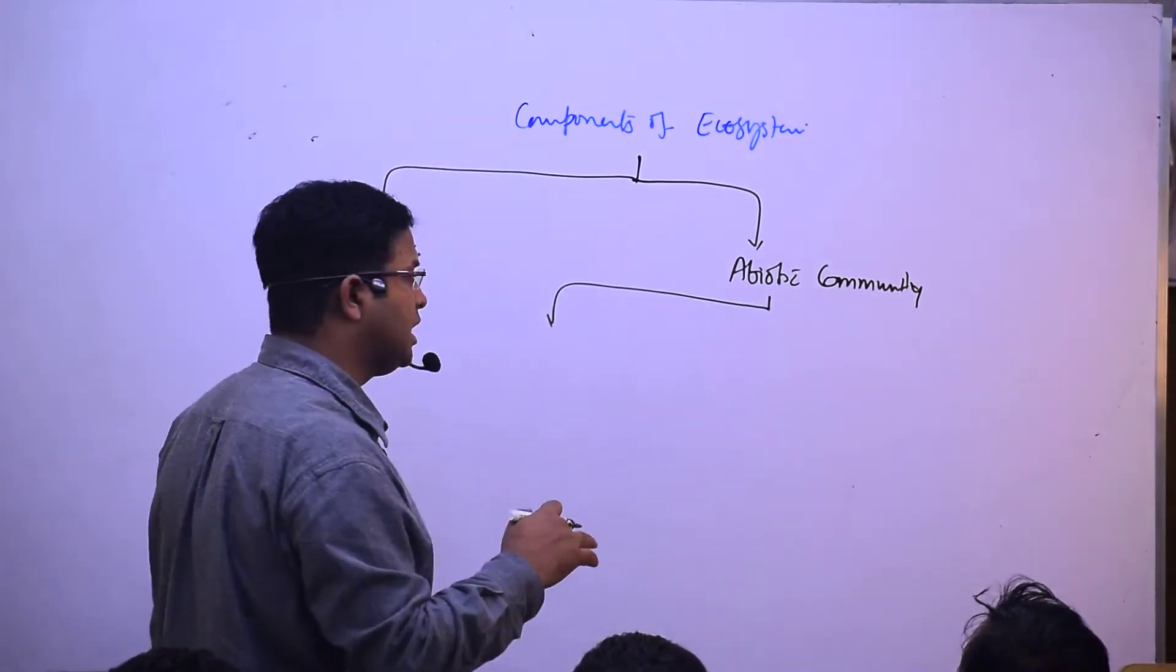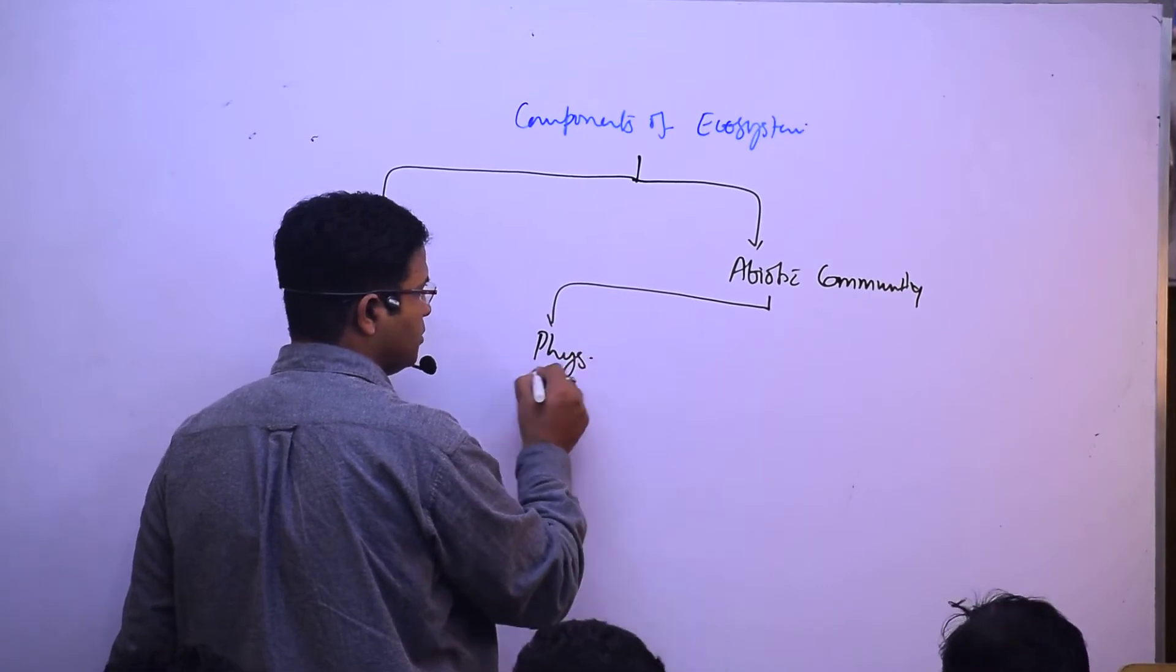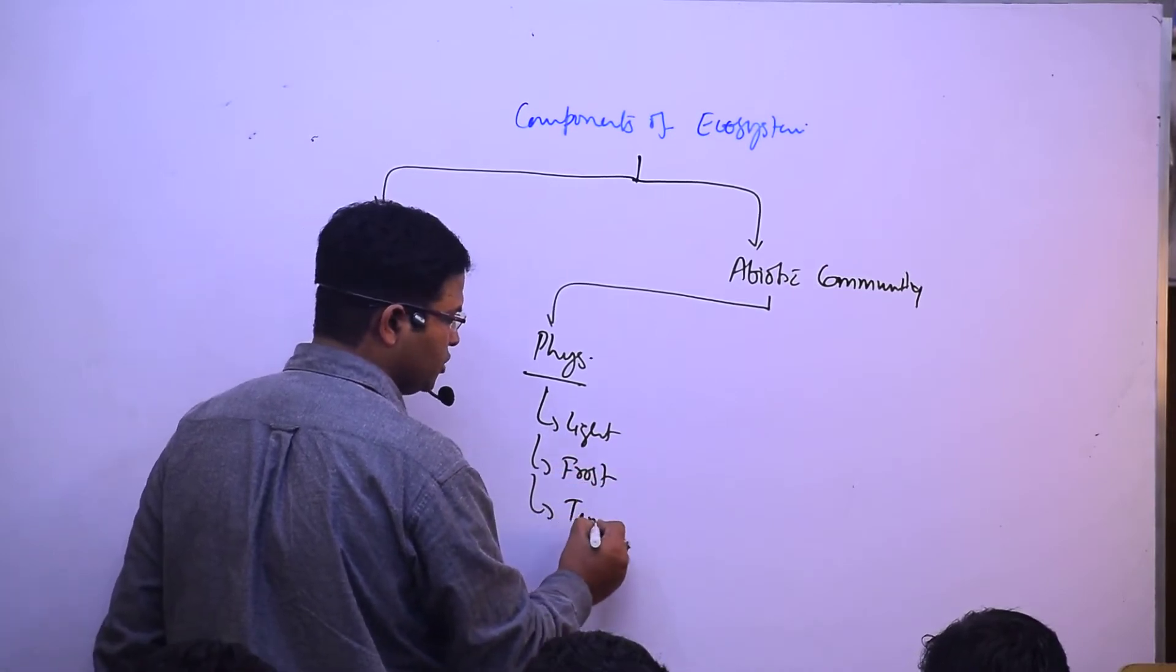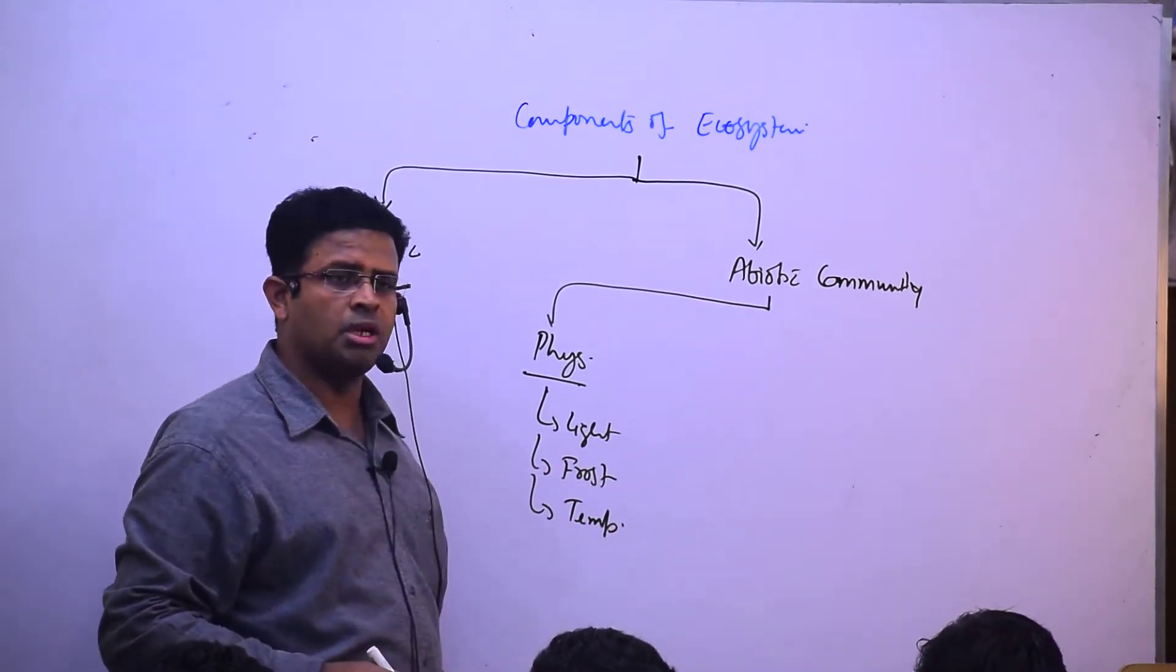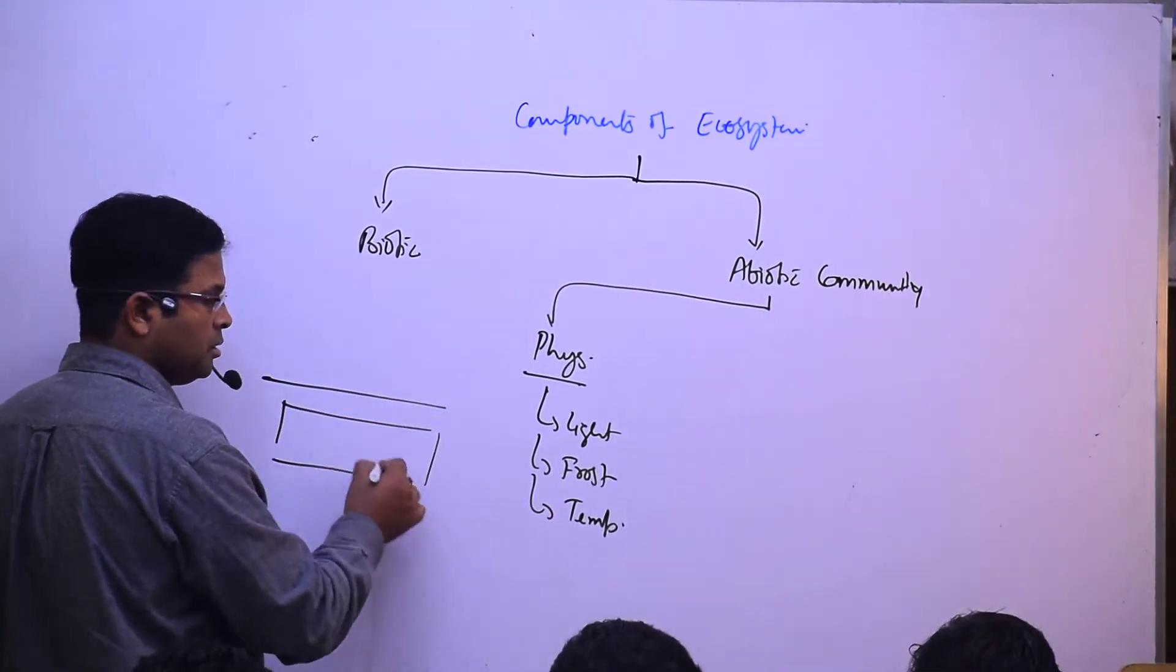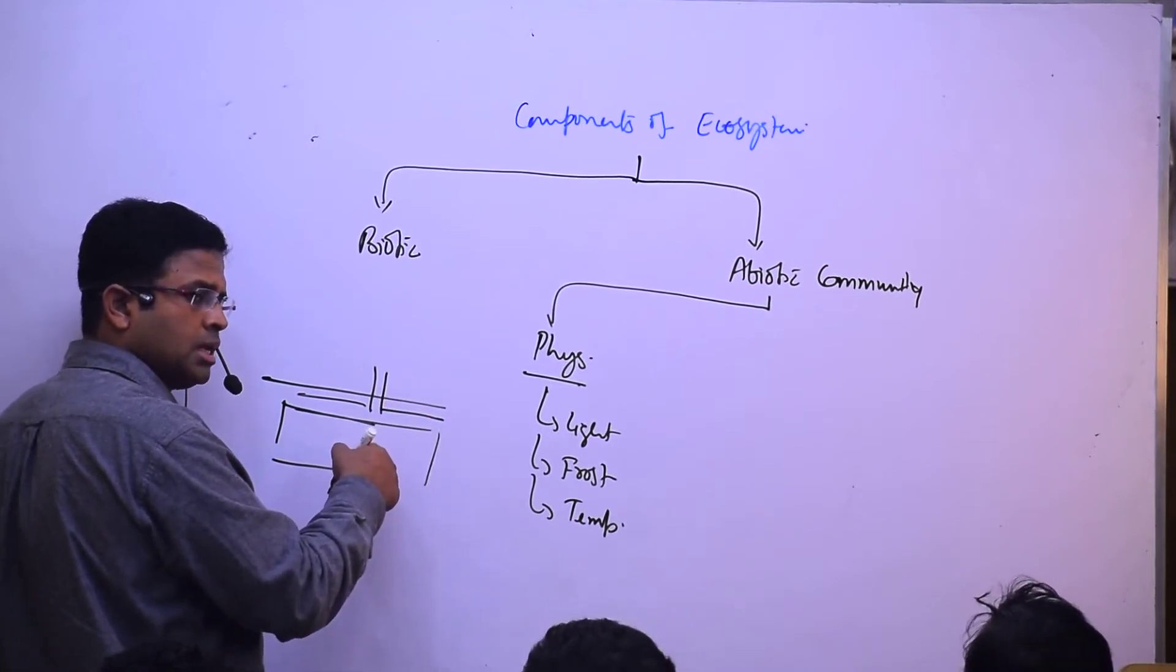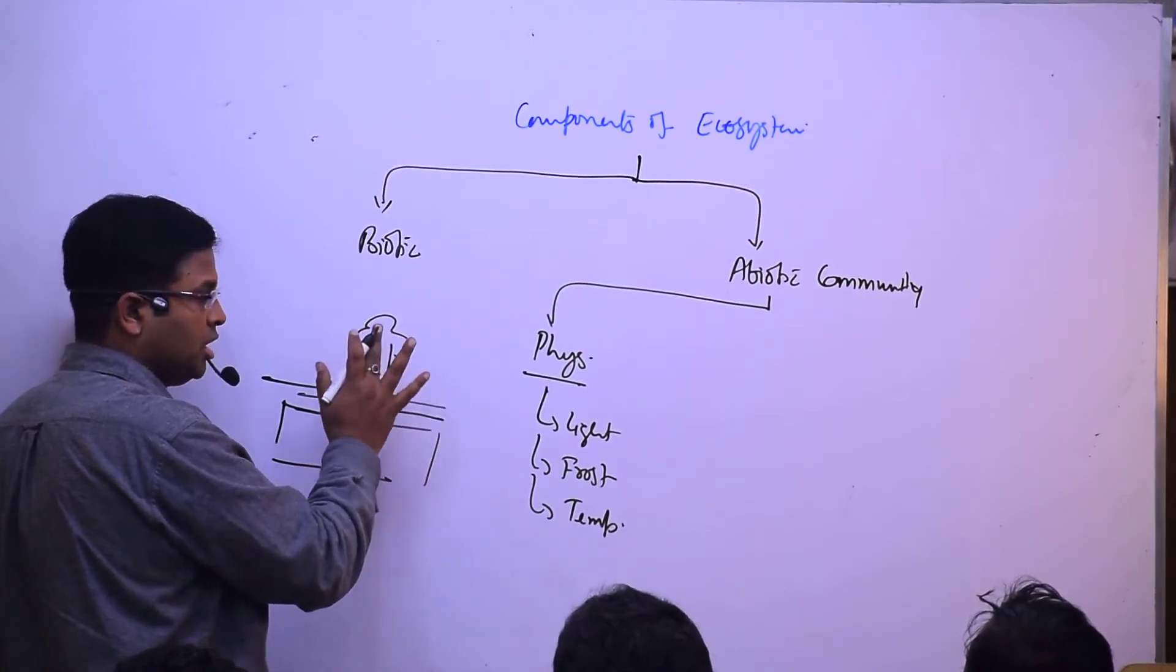Specifically, there are physical components: light, frost, and temperature. If frost condition is in the soil, what will happen? The roots of the plant cannot take water from the soil.